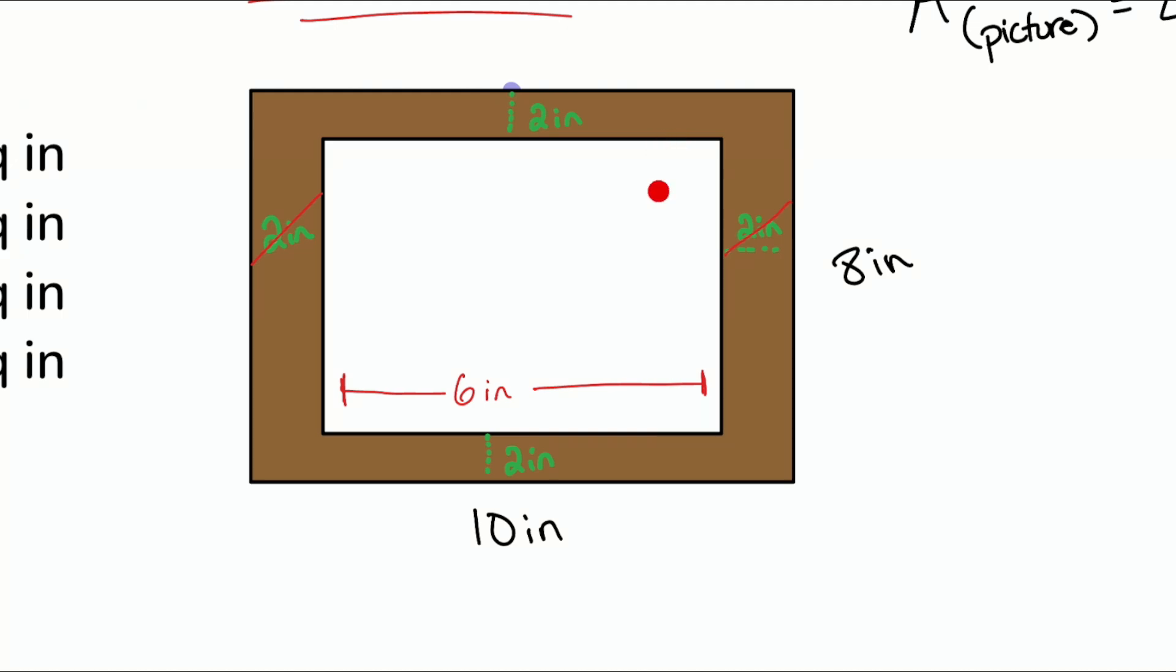What is our width going to be up here? Well hey, we have 8 inches from top to bottom. If we cut out 2 inches from up top and the 2 inches from down here, what's 8 take away 2 take away 2? That'll be 4. So booyah, we have 4 inches right there from the top of the picture to the bottom, and there we have it.